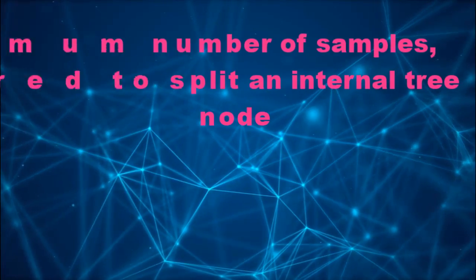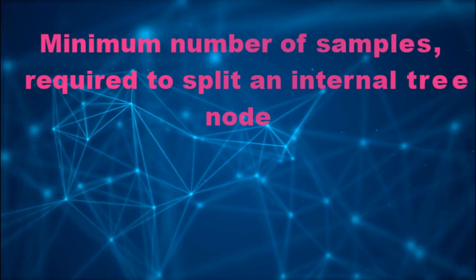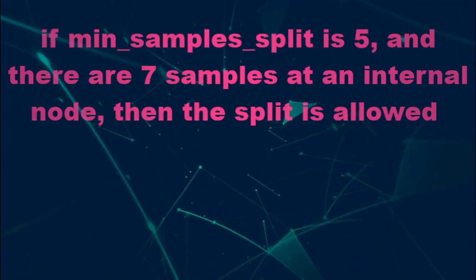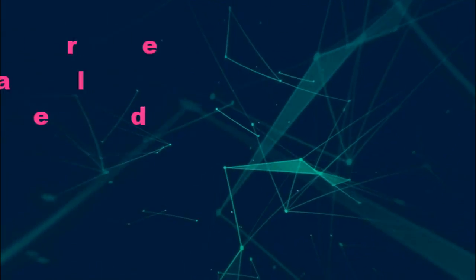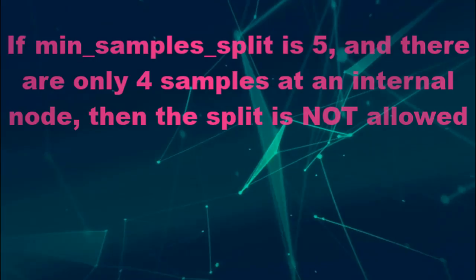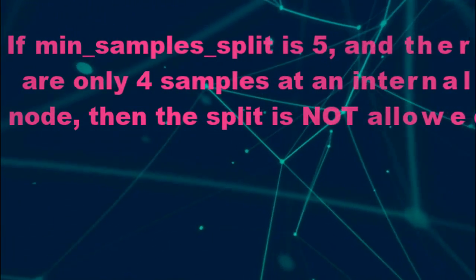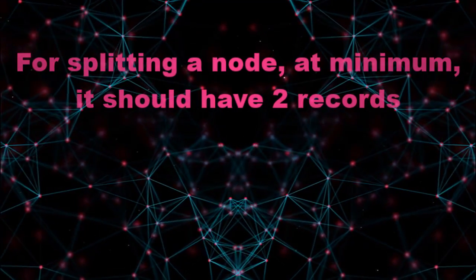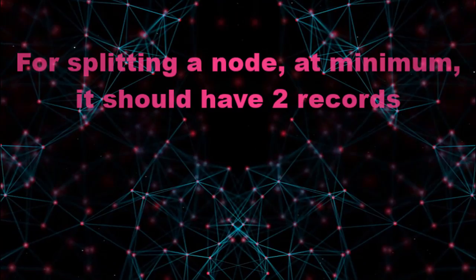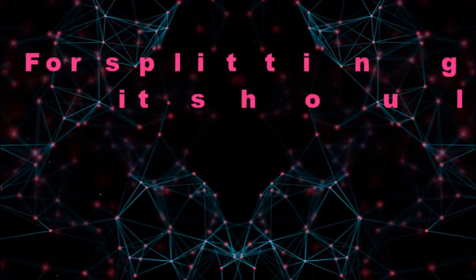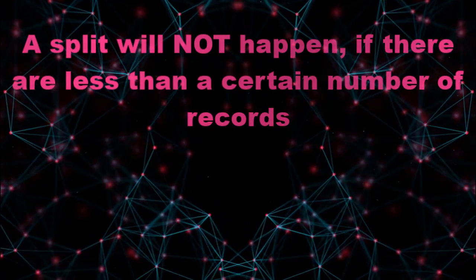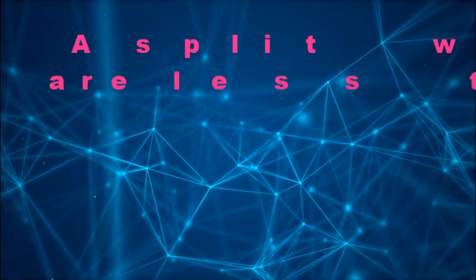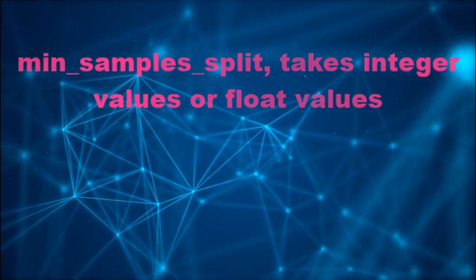The second concept used here is minimum sample split. Minimum sample split specifies the minimum number of samples required to split an internal tree node. For instance, if minimum sample split is 5 and there are 7 samples at an internal node, then the split is allowed. However, if minimum sample split is 5 and there are only 4 samples at an internal node, then the split is not allowed. If you are splitting a node, at minimum it should have 2 records, which after splitting will go into 2 nodes, giving 1 record to each resulting node. Therefore, a split will not happen if there are fewer than the number of records specified by minimum sample split. Minimum sample split takes integer or float values and its default value is 2.